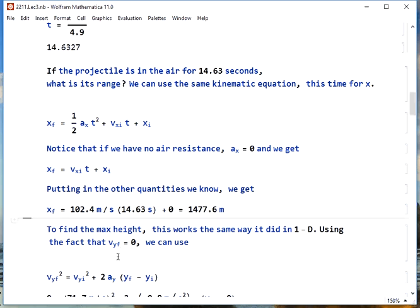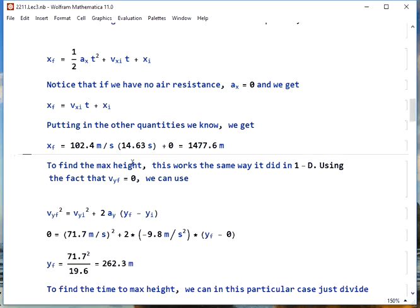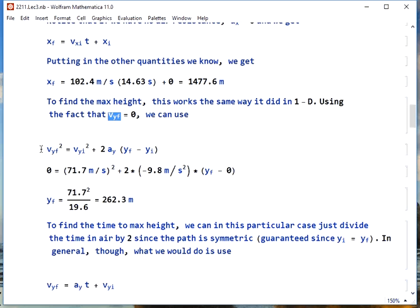To find the maximum height reached, this works the same way as in one-dimensional problems. We use the fact that Vy final is zero if your final position is the maximum height. We can then use this kinematic equation, plug in what we know, and we get that it reaches a height of 262.3 meters.